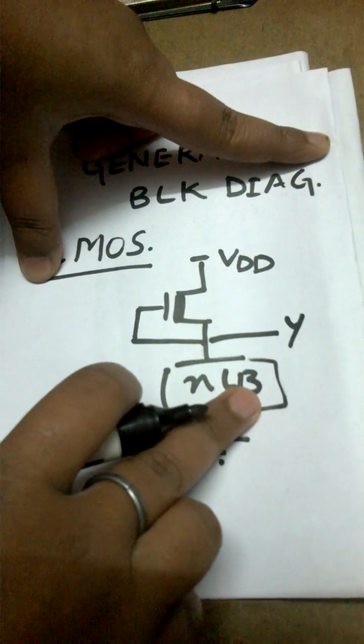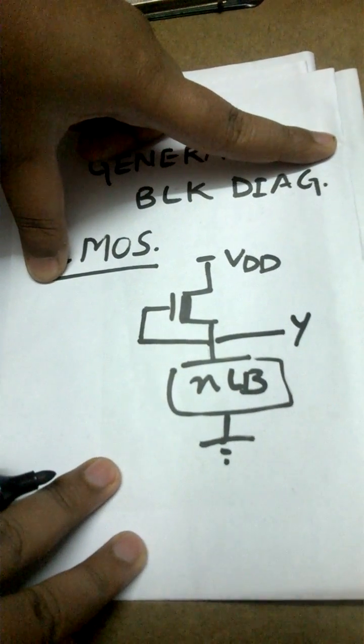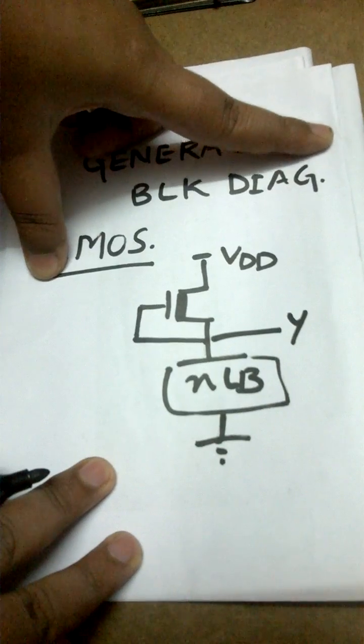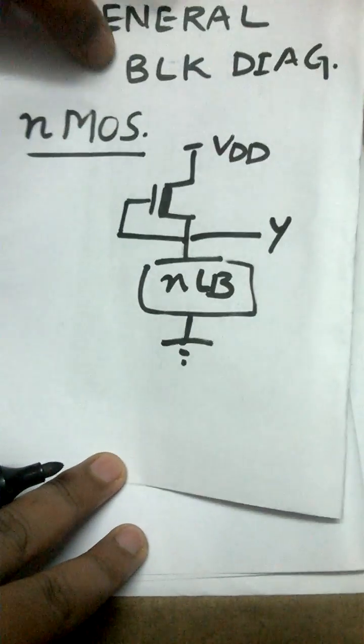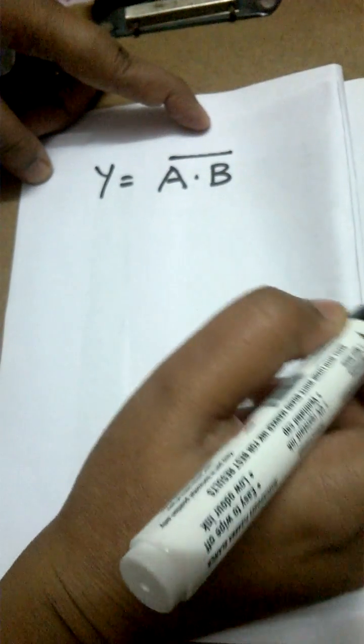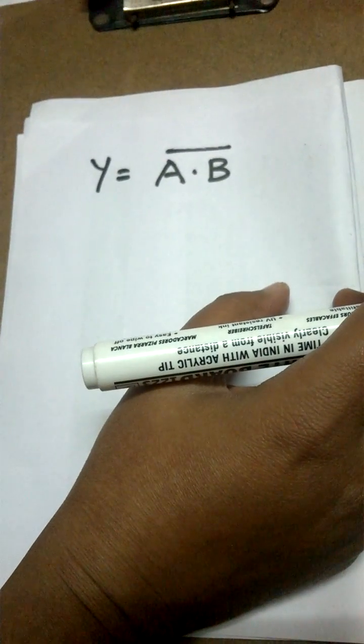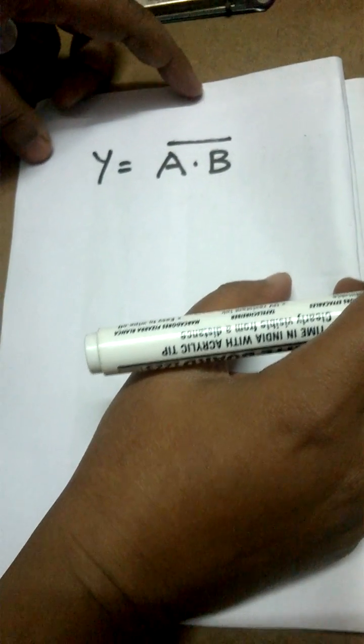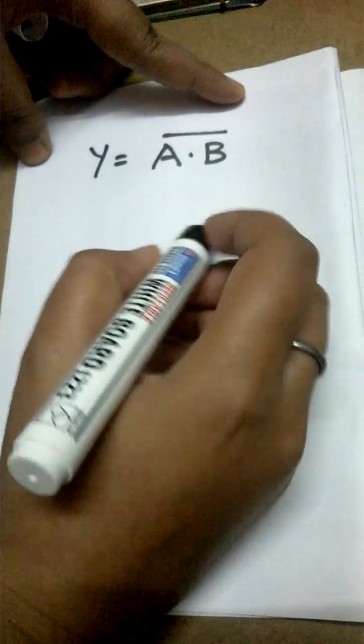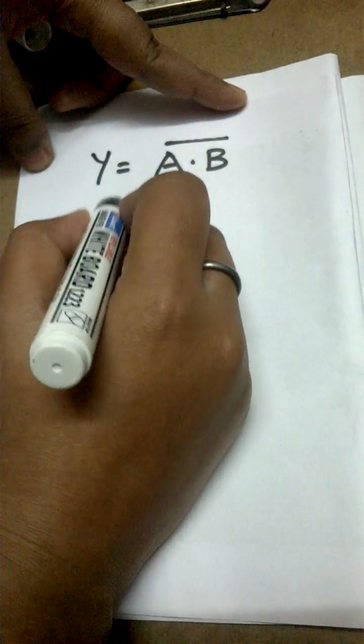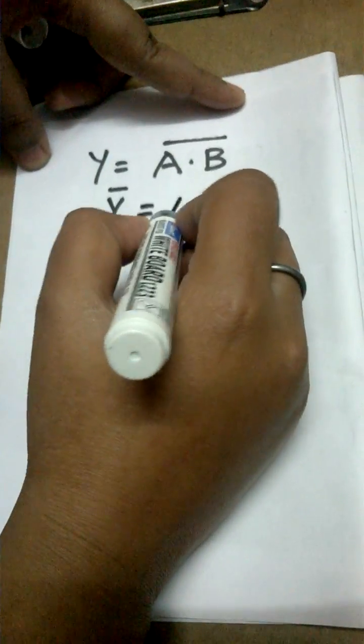This part will remain the same; only the N logic block will change according to the structure that is to be realized. Let's take an example to illustrate the same. Suppose this is to be drawn using the NMOS family or NMOS devices.